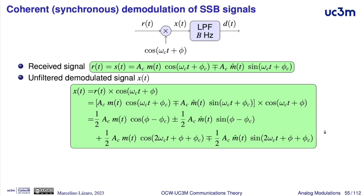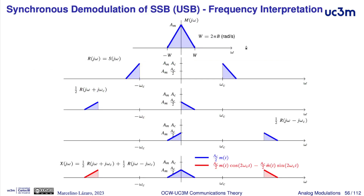This is what we have after the product with the cosine. This product will then be filtered with a low-pass filter. In the frequency domain, if this is the Fourier transform of the modulating signal, this is the frequency response of an upper sideband SSB modulated signal. The product with the cosine produces two replicas of this spectrum, each with half the amplitude of the received signal.